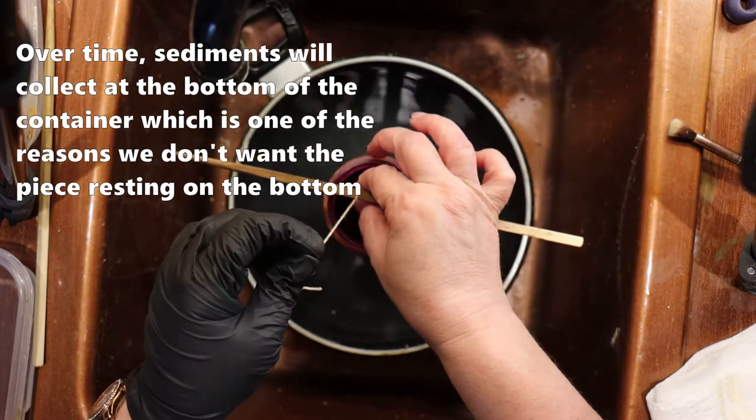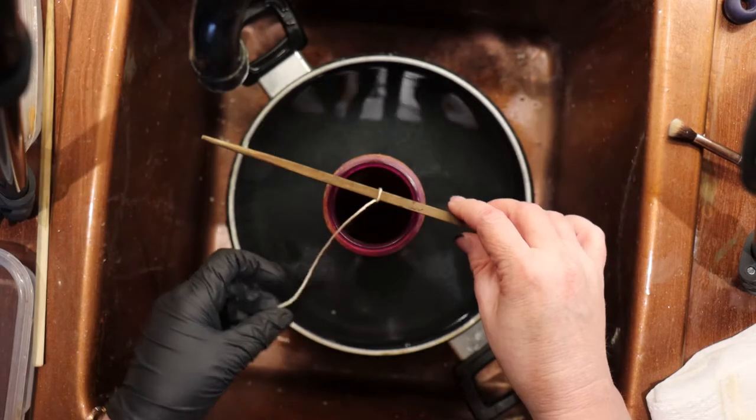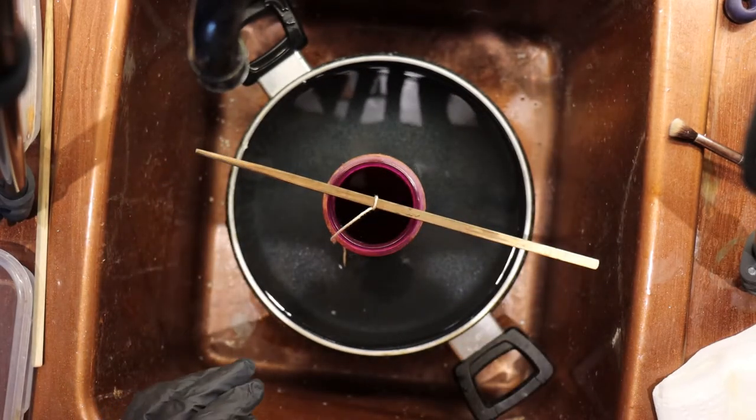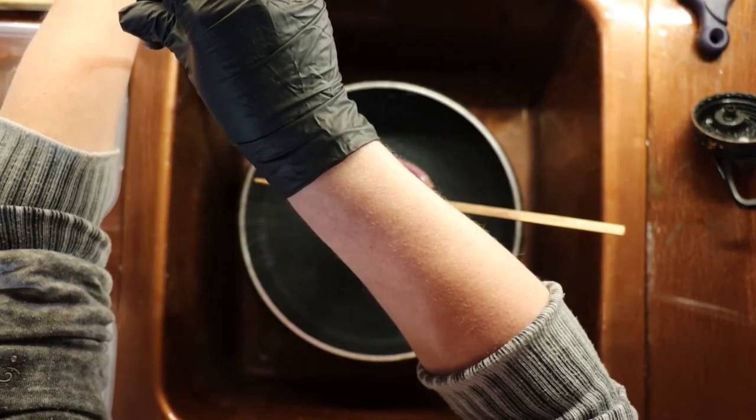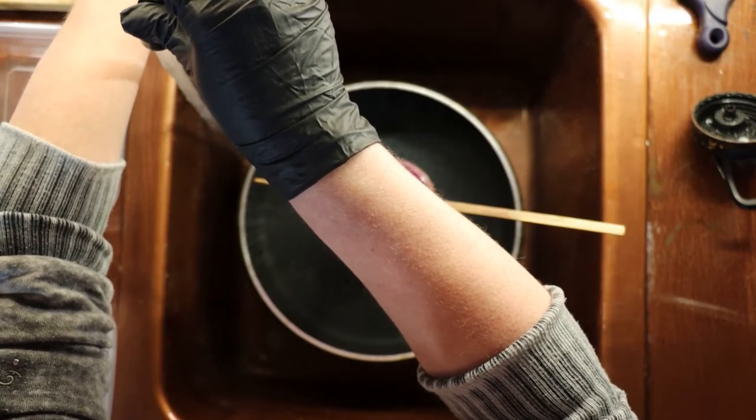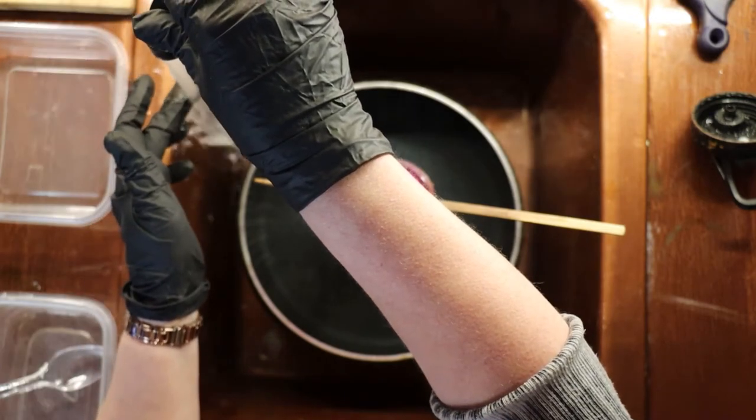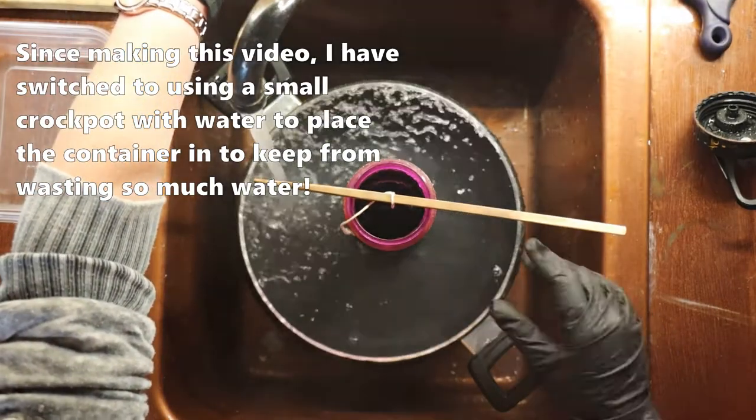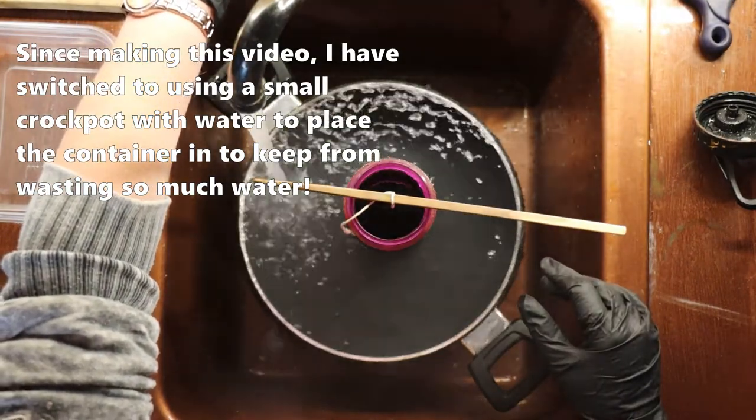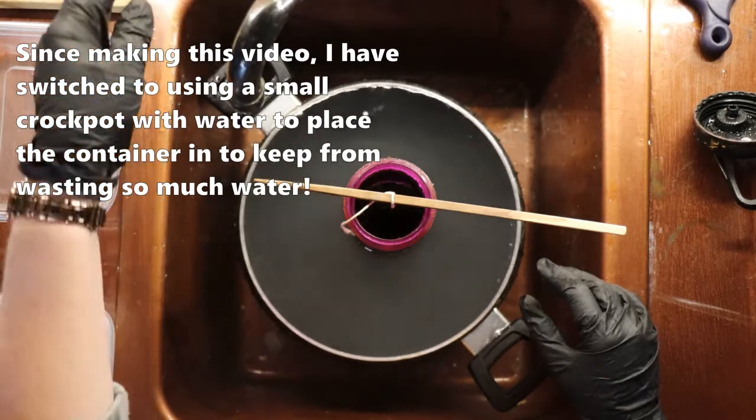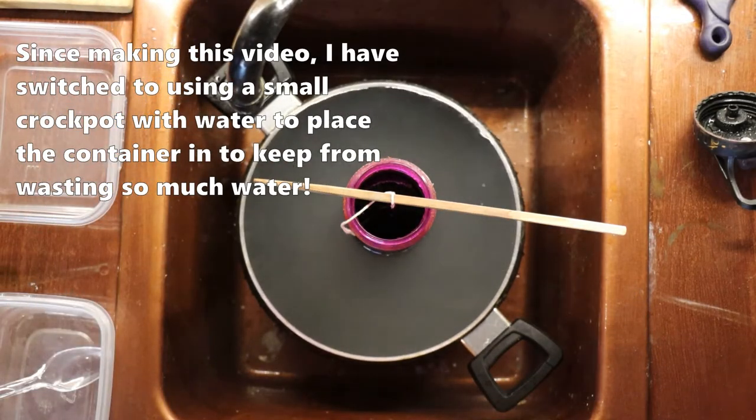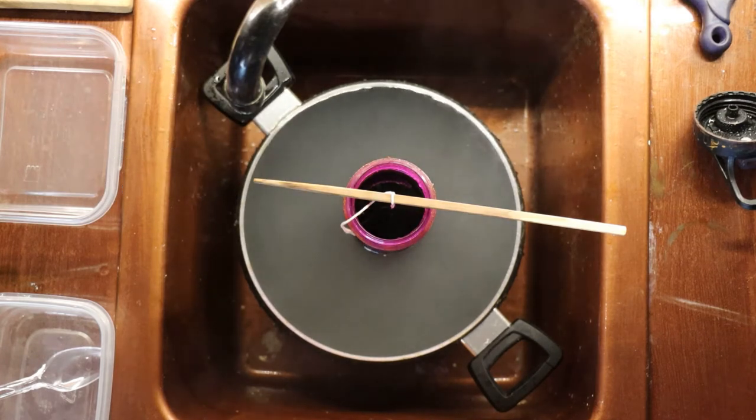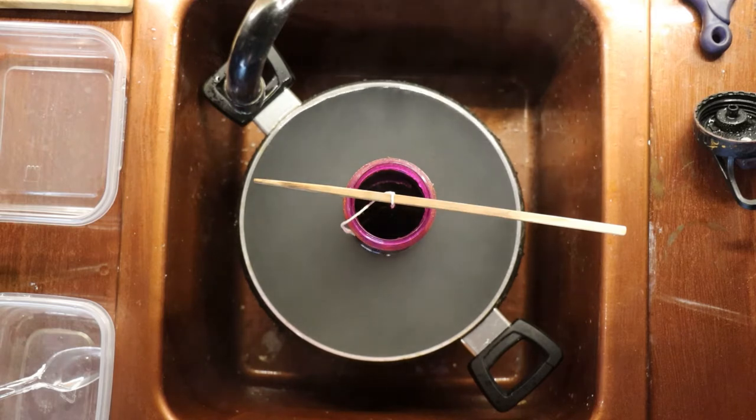And we want to make sure that it is below the surface of the solution. So we just tie the string around the chopstick and secure it where it will be suspended in the middle of the solution. Once we have that ready, because we've allowed this to set for a while, I want to go ahead and heat up that water again. So now we want the piece to set for 20 minutes, so we need to set a timer for 20 minutes, and then we'll come back and check on its progress.